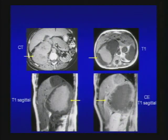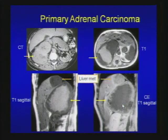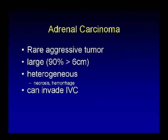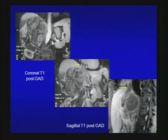Now here's a case of a large right suprarenal mass, very heterogeneous on CT and T1-weighted image. On post-gadolinium T1 sagittal image, you see irregular peripheral enhancement and central necrosis — looks like a very aggressive tumor. This is adrenal cortical carcinoma. Did you notice the liver metastasis? Adrenal carcinoma is a very rare, aggressive tumor, usually large at presentation, heterogeneous because of hemorrhage or necrosis, and has a propensity to invade the IVC. Here's a CT case in a woman with right upper quadrant pain and a large right adrenal mass — on MR you see the tumor thrombus extending into the IVC.